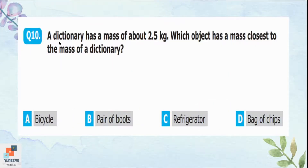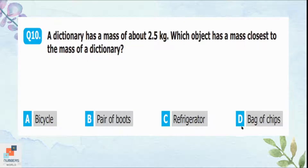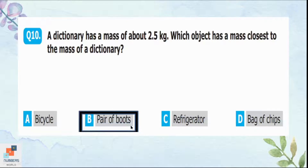Question 10: A dictionary has a mass of about 2.5 kilograms. Which object has a mass closest to the dictionary? Option A (bicycle) and option C (refrigerator) are much heavier than 2.5 kilograms, and option D (bag of chips) is lighter. So option B, the pair of boots, is the most appropriate answer — its mass is closest to the mass of the dictionary.